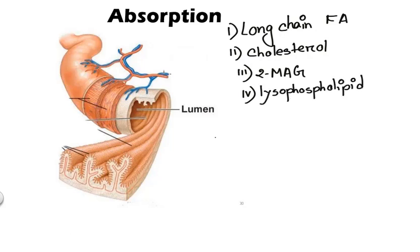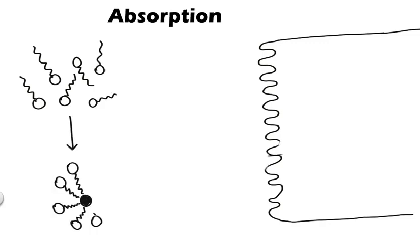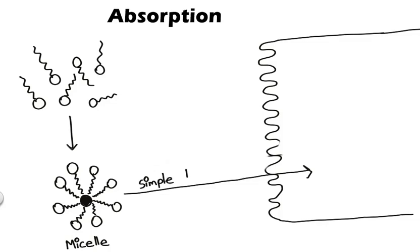So to help them to cross the barrier the bile salts come to play. Bile salt interacts with the product of fat digestion and they form a globular water soluble molecular aggregate known as micelle. Micelle is water soluble because it has hydrophilic part to the exterior and hydrophobic part to the interior. As it has become water soluble it can easily cross the water layer of intestinal mucosa and they reach the brush border of mucosal cell. Then they are absorbed in the enterocyte by simple diffusion.